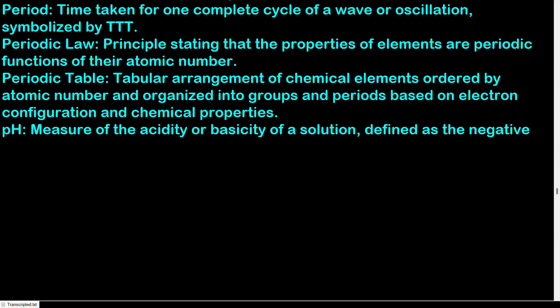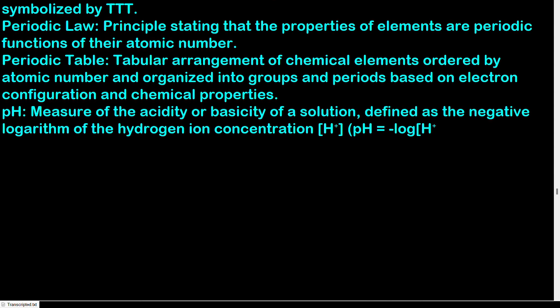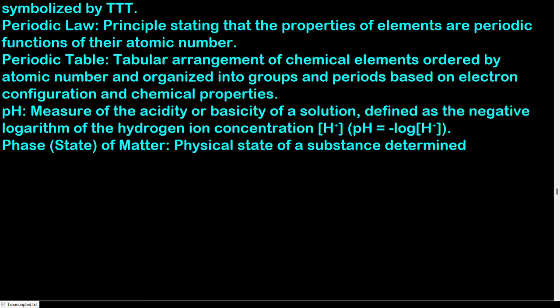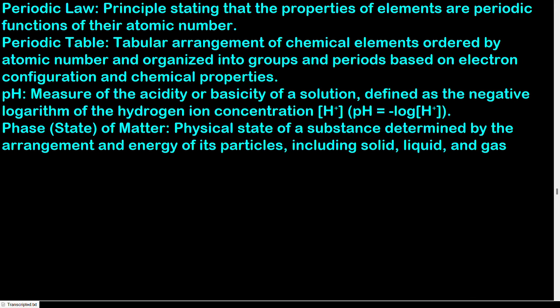pH: measure of the acidity or basicity of a solution, defined as the negative logarithm of the hydrogen ion concentration; pH = −log[H⁺]. Phase (state of matter): physical state of a substance determined by the arrangement and energy of its particles, including solid, liquid, and gas. Phase change: transition of a substance from one phase to another due to changes in temperature or pressure. Phase diagram: graph showing the conditions of temperature and pressure under which a substance exists in different phases.